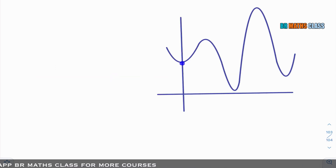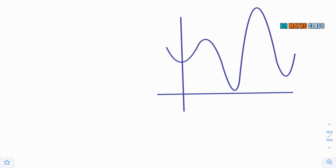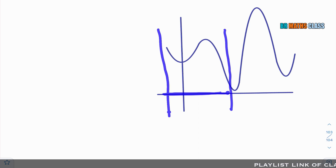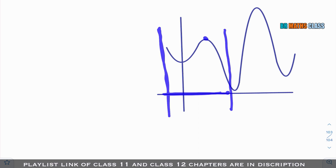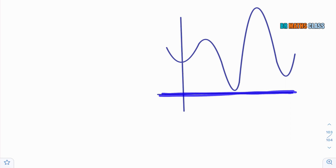Observe this graph. This graph attains minimum value at this point, and at this point the graph attains maximum value. At this point also, the graph attains maximum value. Here, if you observe, this graph attains maximum value at more than one point. When we discuss maxima and minima of this function in a particular interval, this is the maximum value. When we discuss the maximum of this function on its entire domain, this is maximum and this is also maximum. We call this local maximum, and this we call absolute maximum.